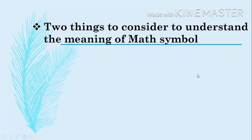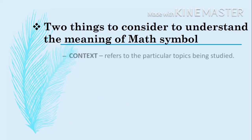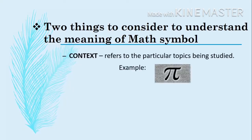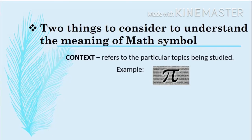Let's now have the two things to consider to understand the meaning of a math symbol. First is context, which refers to the particular topic being studied. For example, pi — if the context or topic is about geometry, the equivalent value of pi is 3.14, while if the context is about trigonometry, the equivalent value of pi is 180 degrees. It is important to understand the context to understand the meaning of a certain symbol, because without context there could be confusion.